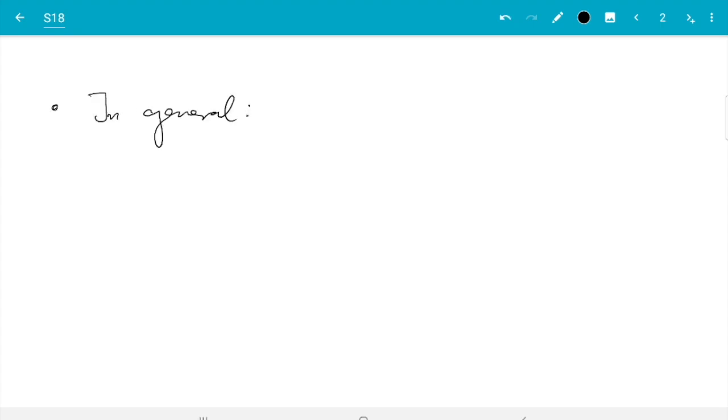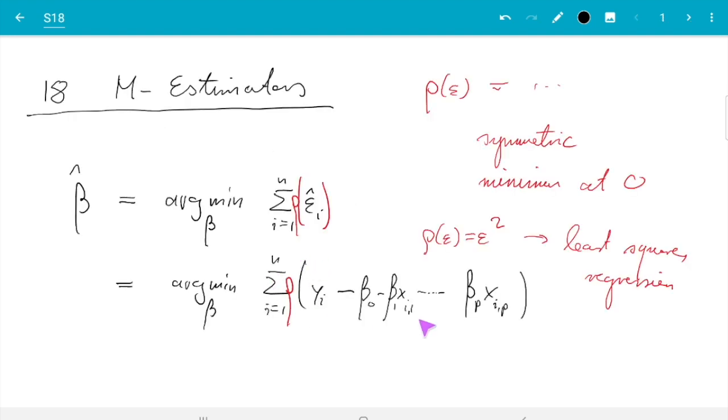So in general, no closed form expression for beta hat. So what we need to do, and I'll discuss this in the second video, we need to find some numeric method which minimizes this function as a function of beta numerically to find the beta for which it is small.